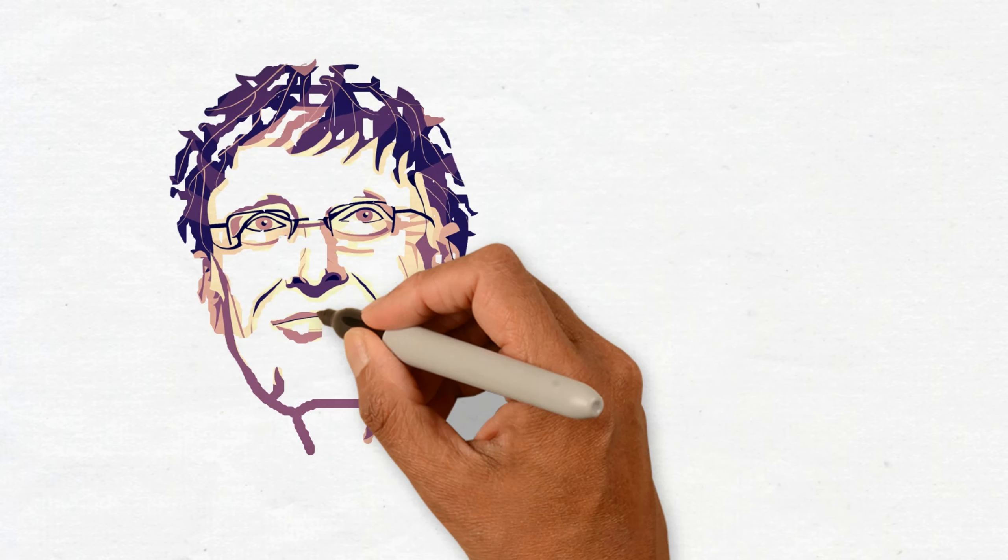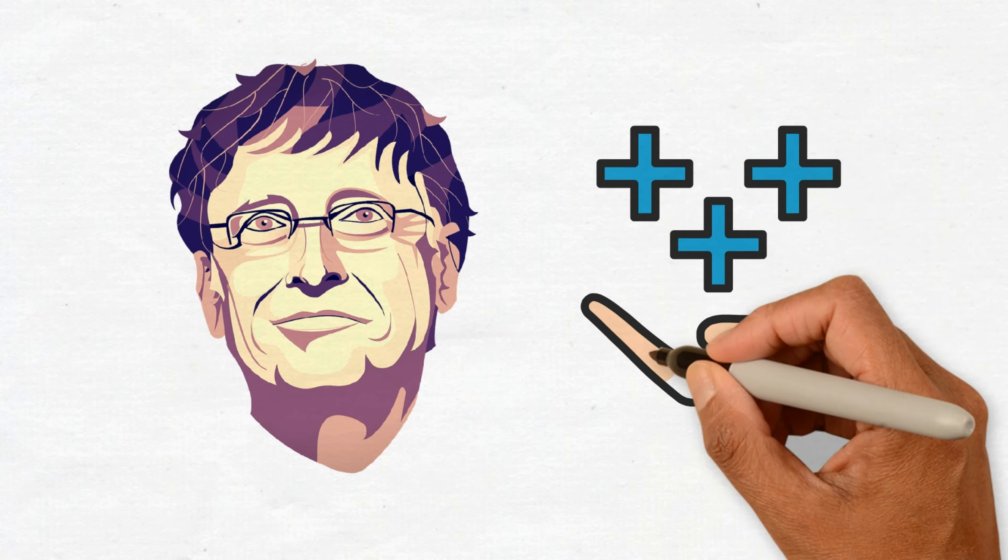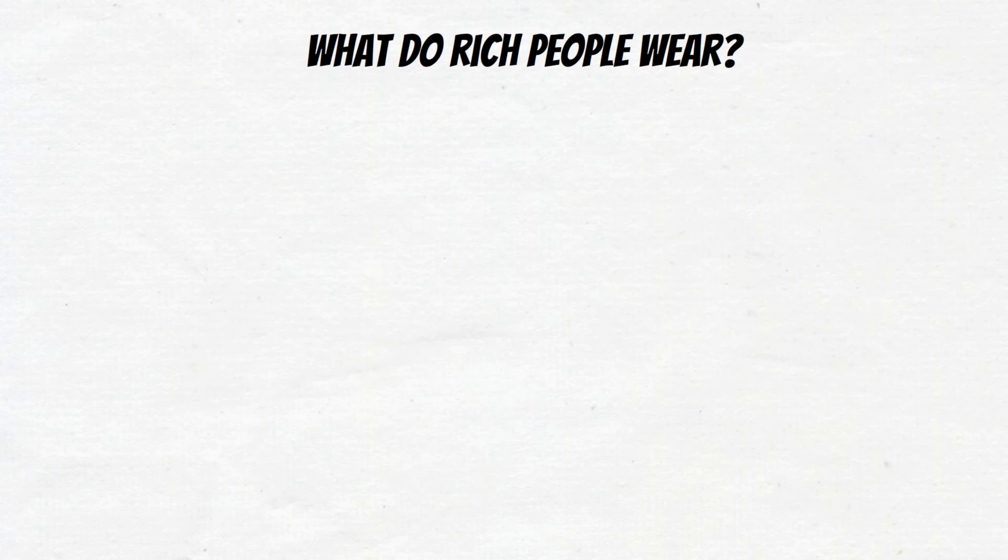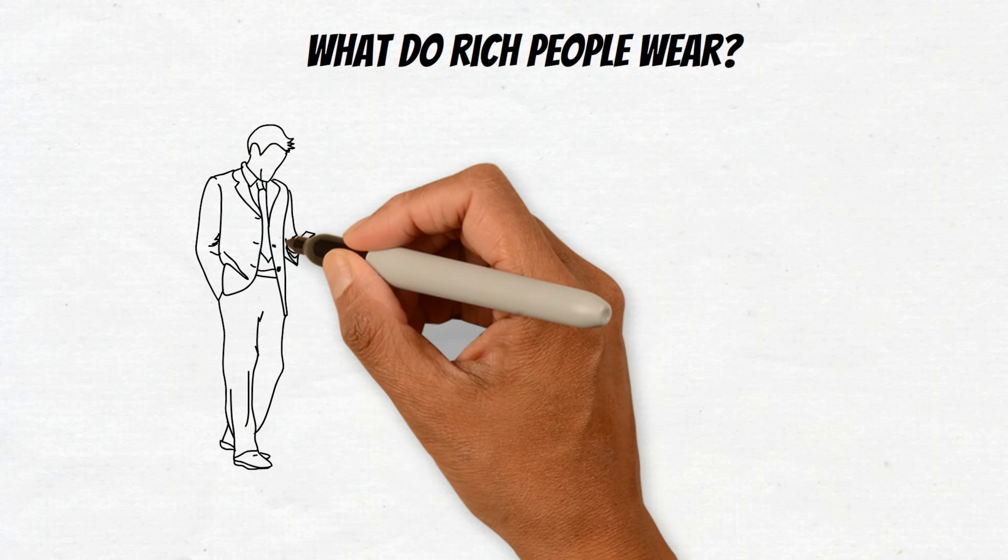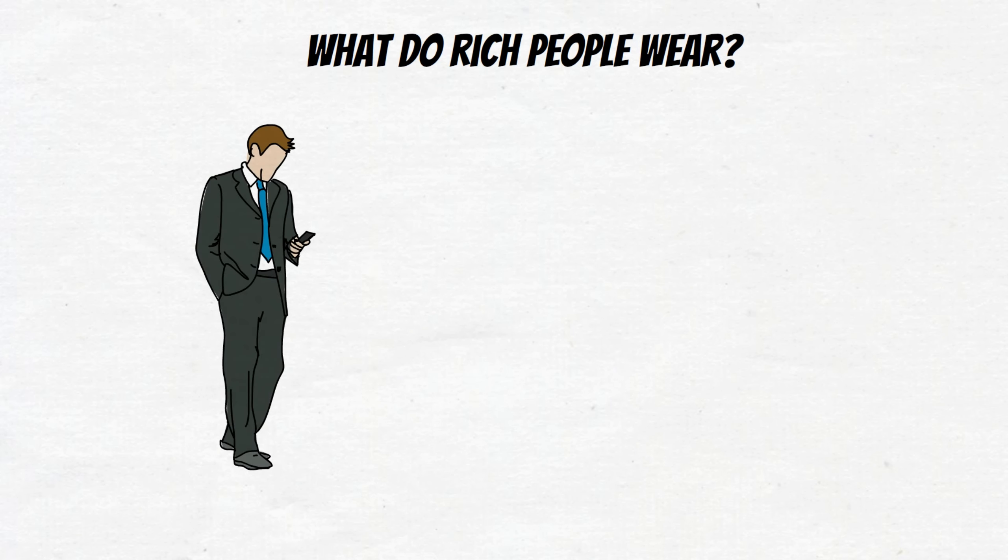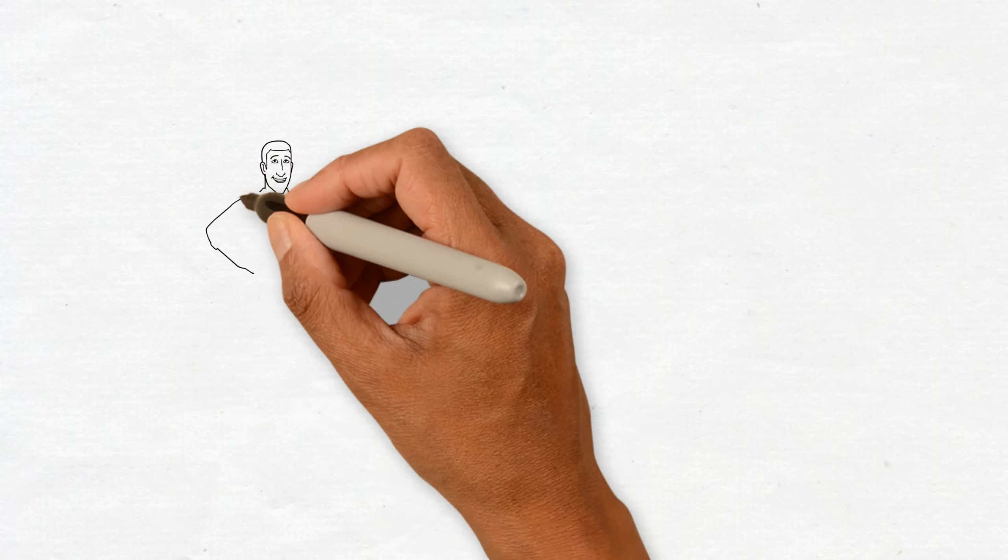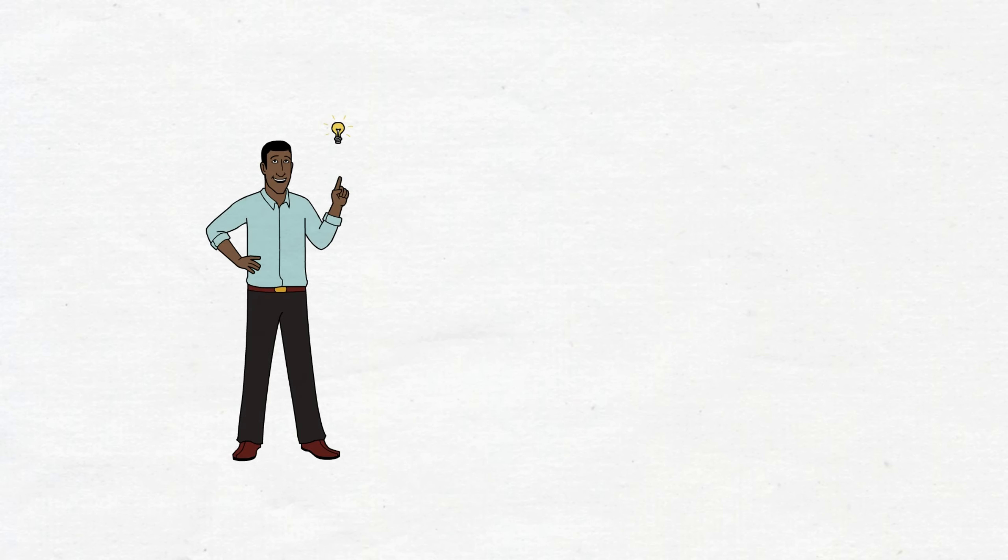Even the wealthiest people don't waste their money on designer clothes. They often choose more budget-friendly options. You might be asking, so what do rich people wear? Many choose what to wear depending on the situation. For instance, when they have important events to attend, they'll dress up and look fancy. But when there's no need to dress up, they often keep it simple and casual. So, I advise you to follow what the rich people do in this regard because many of them do not spend their money on designer clothes, and there's a good reason for it.